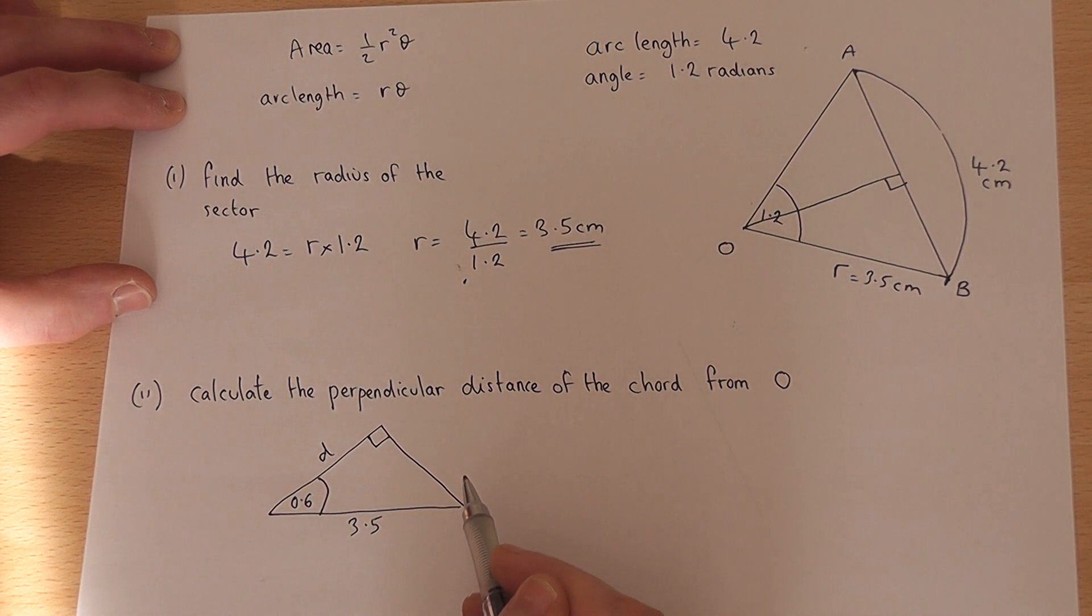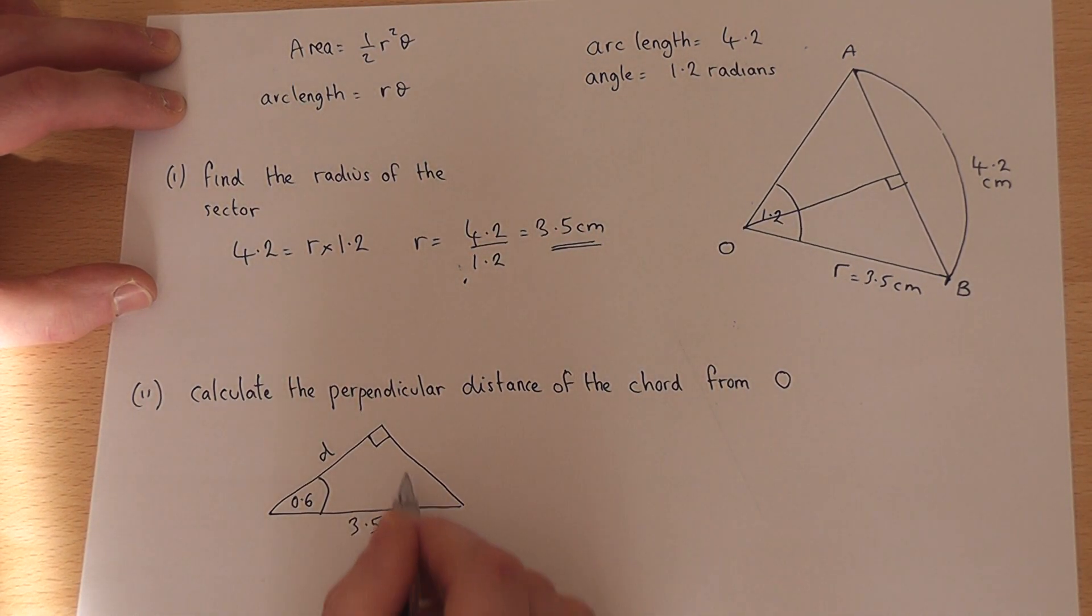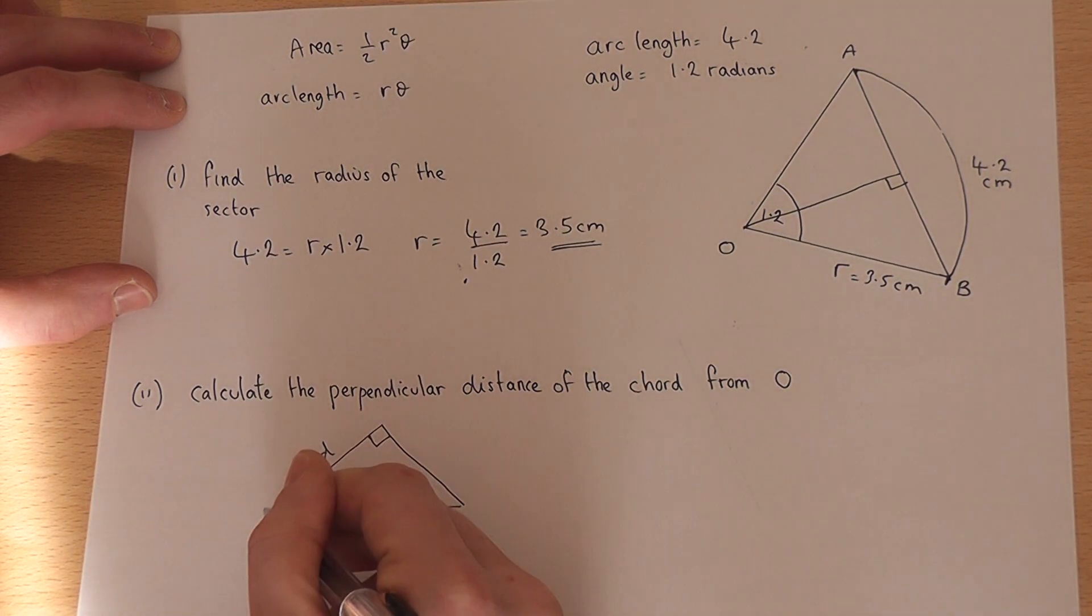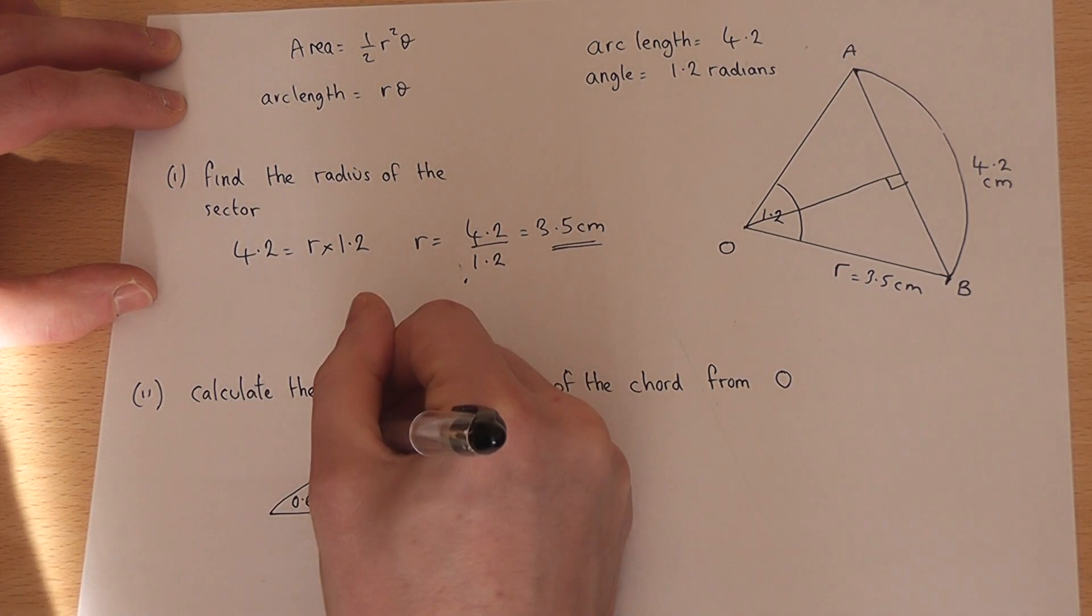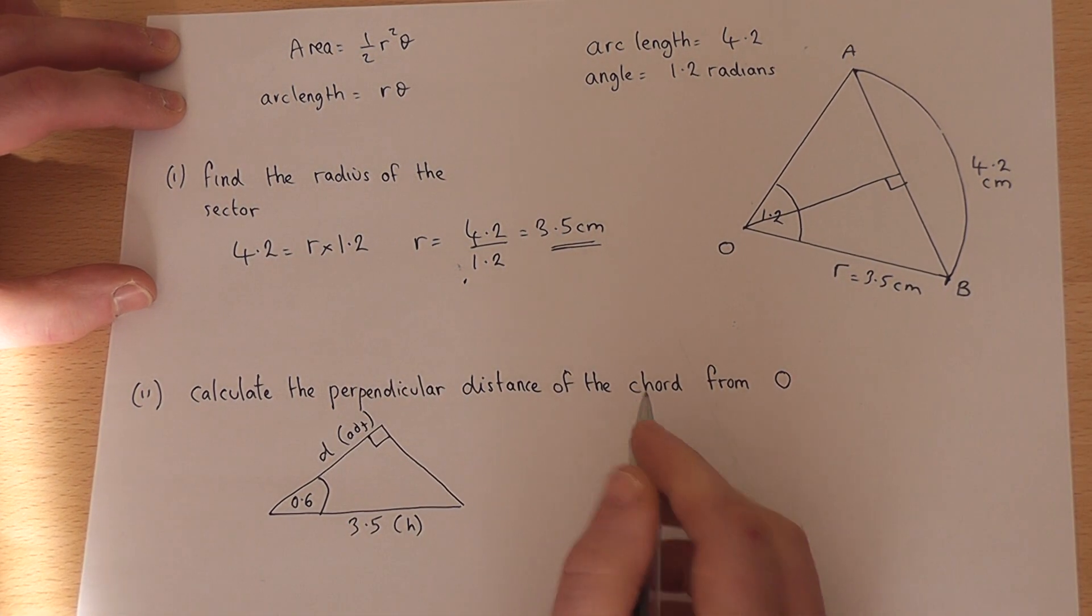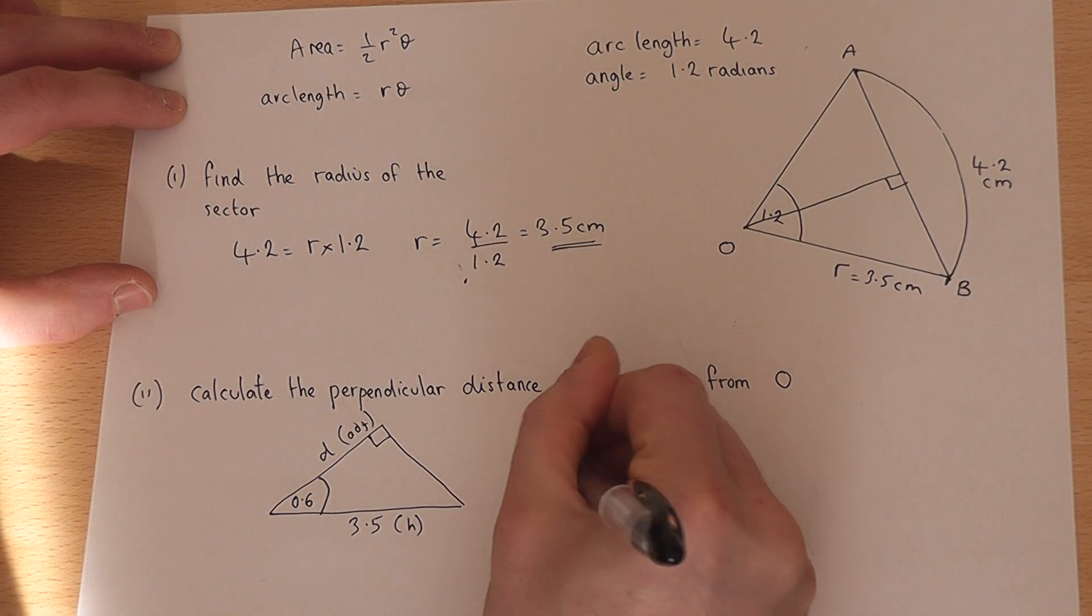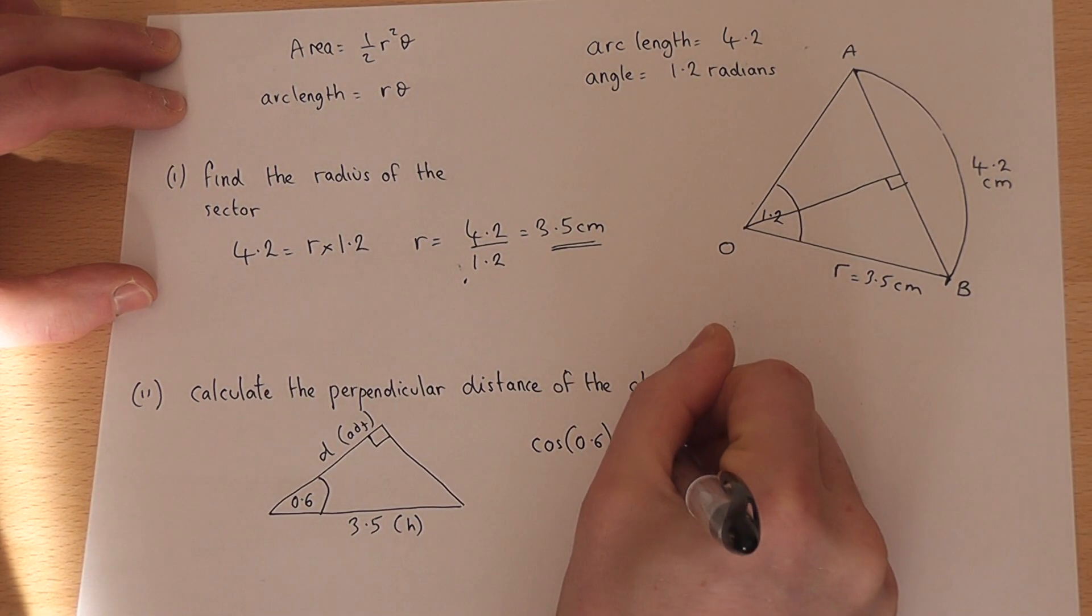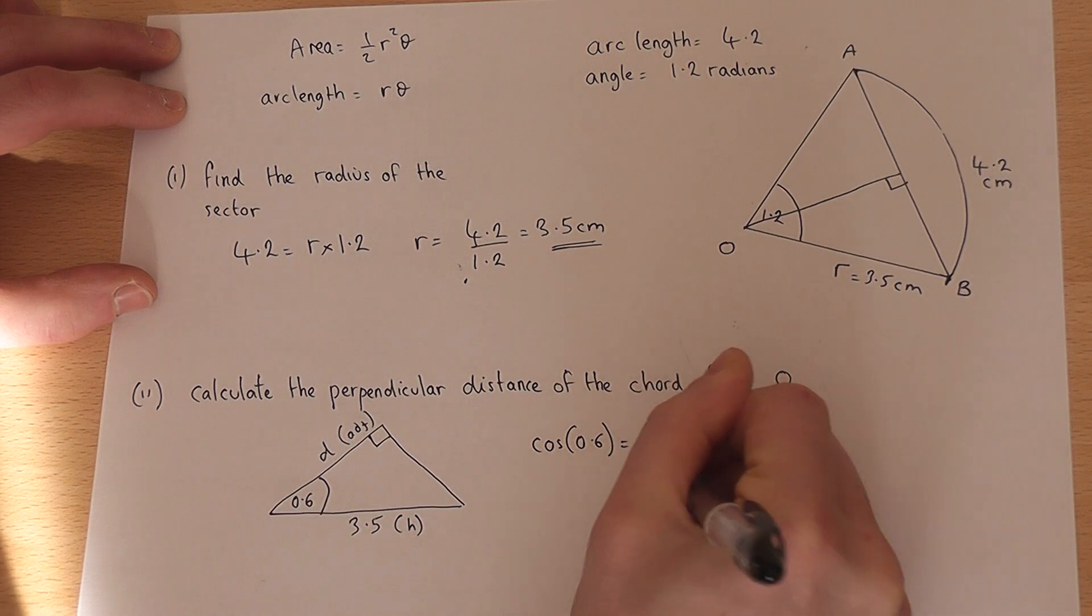we have to use SOH CAH TOA, because we know the hypotenuse, which is opposite the right angle. We want to find d, which is adjacent to the angle, so therefore I can write down that cos of the angle is equal to adjacent over hypotenuse.